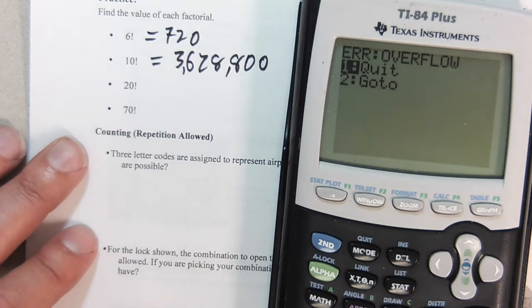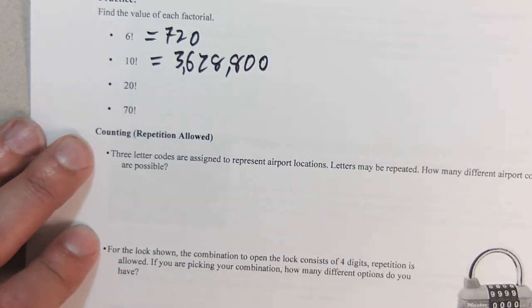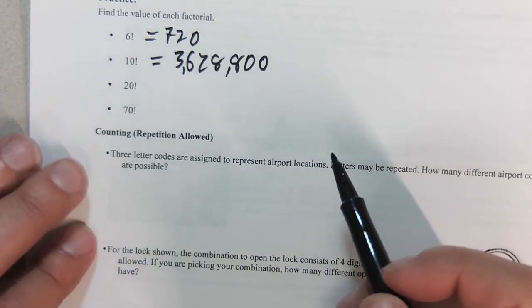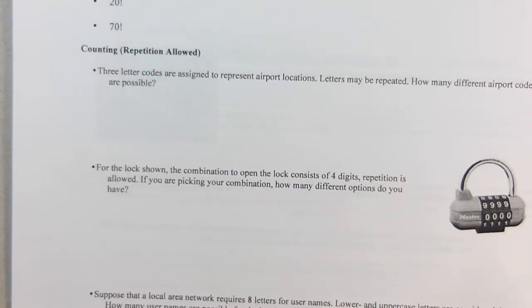Now the 70 factorial is going to break my calculator because it's an overflow, so it can't handle that. These computers that we're using can work up to a certain point.